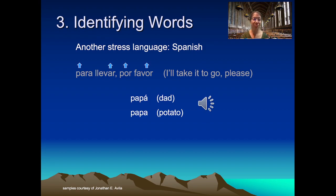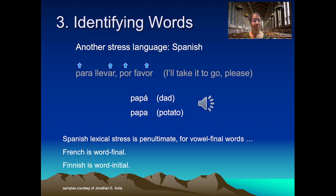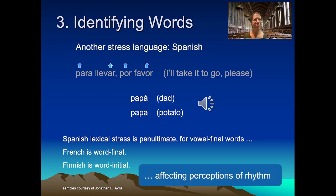Spanish generally has relatively regular stress patterns: in vowel-final words, stress usually falls on the penultimate syllable, and in orthography a stress accent is marked when stress appears on a different syllable. Many languages have varying but consistent rules for positioning stress — in French, stress is generally word-final; in Finnish, it is canonically word-initial. The combination of different stress positions and different prosodic cues for realizing stress yields quite a wide range of apparent rhythms in speech.